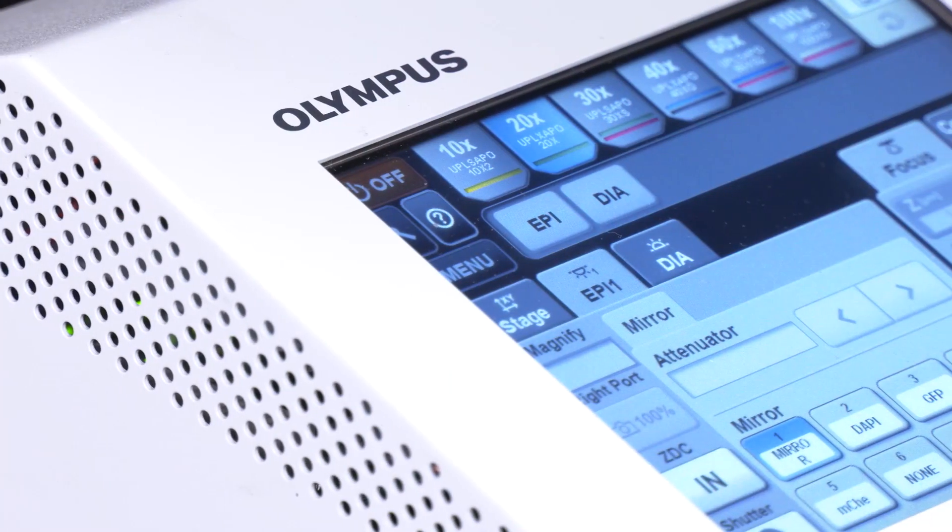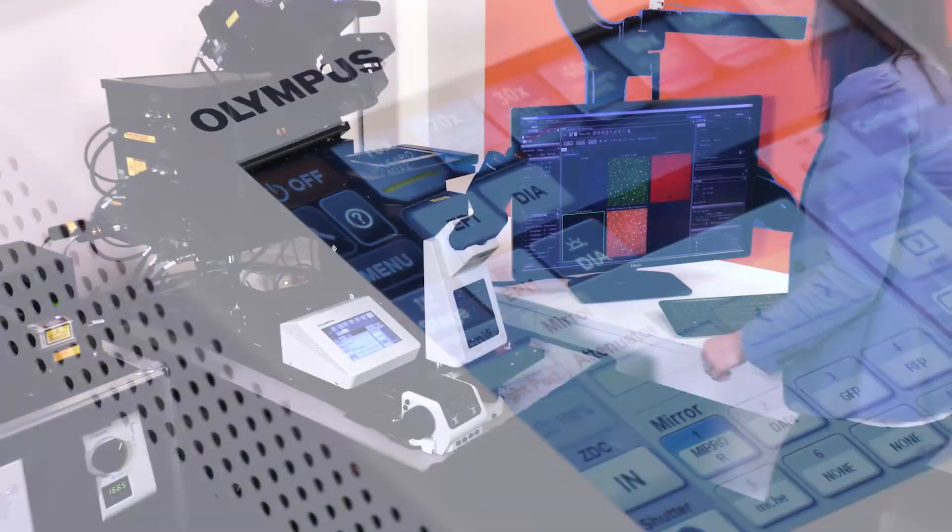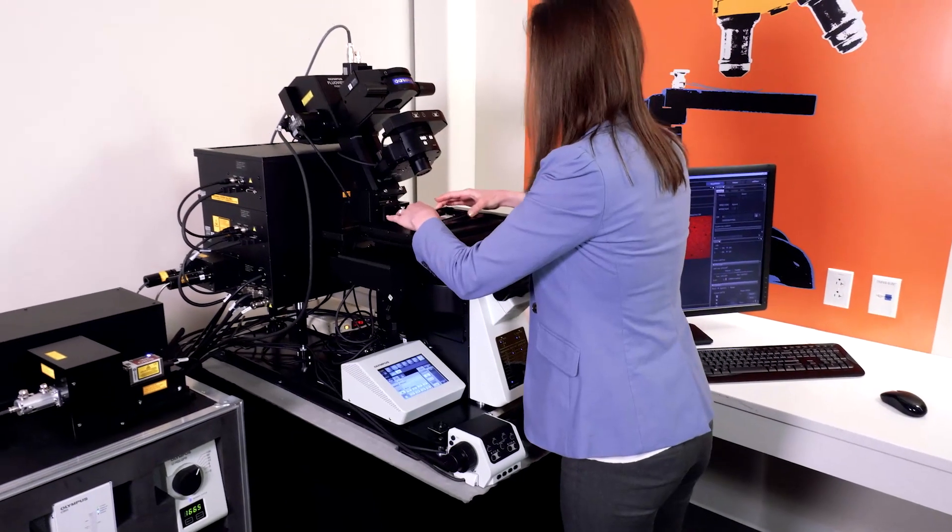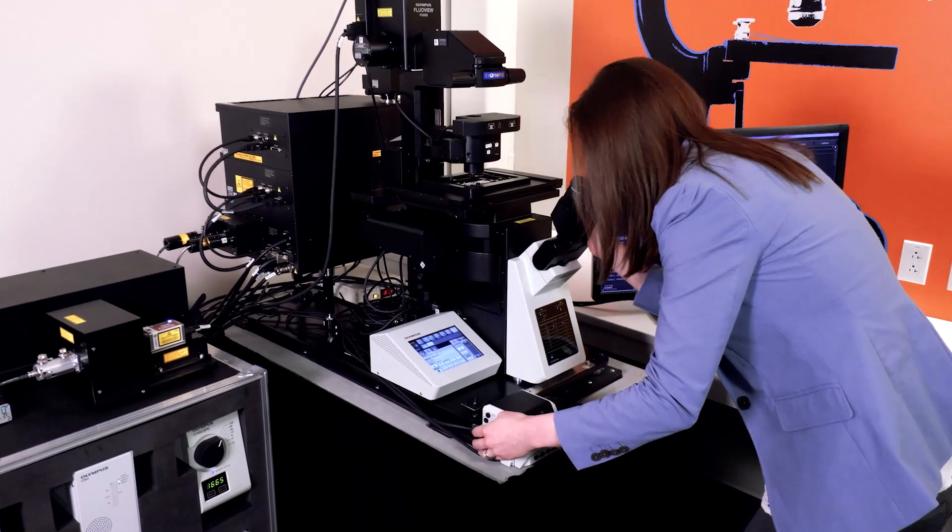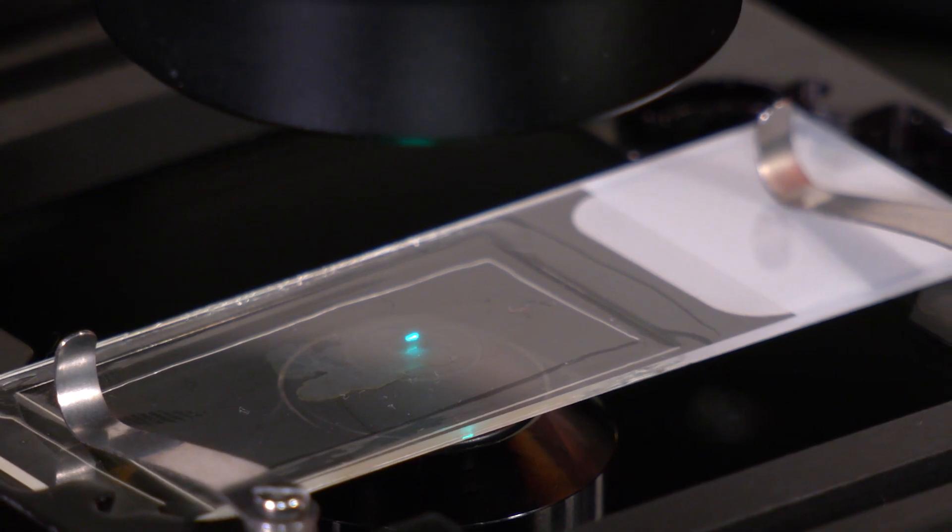Traditionally, confocal microscopes have relied on visible light to produce multicolor 3D images. But using visible light causes some challenges and limitations, such as phototoxicity, limited depth penetration, and spectral overlap, including contamination from autofluorescence.